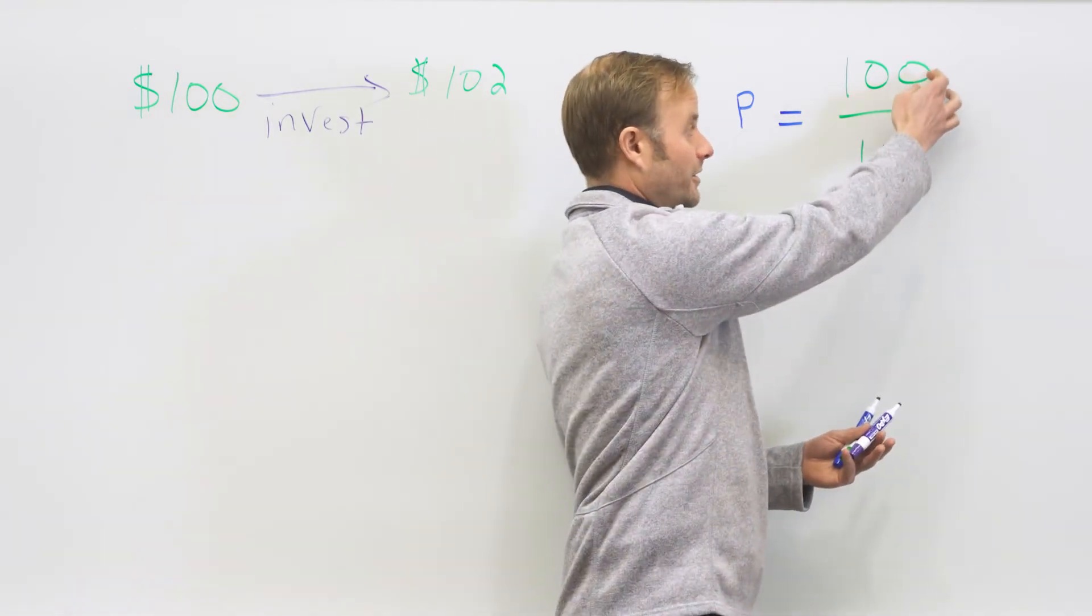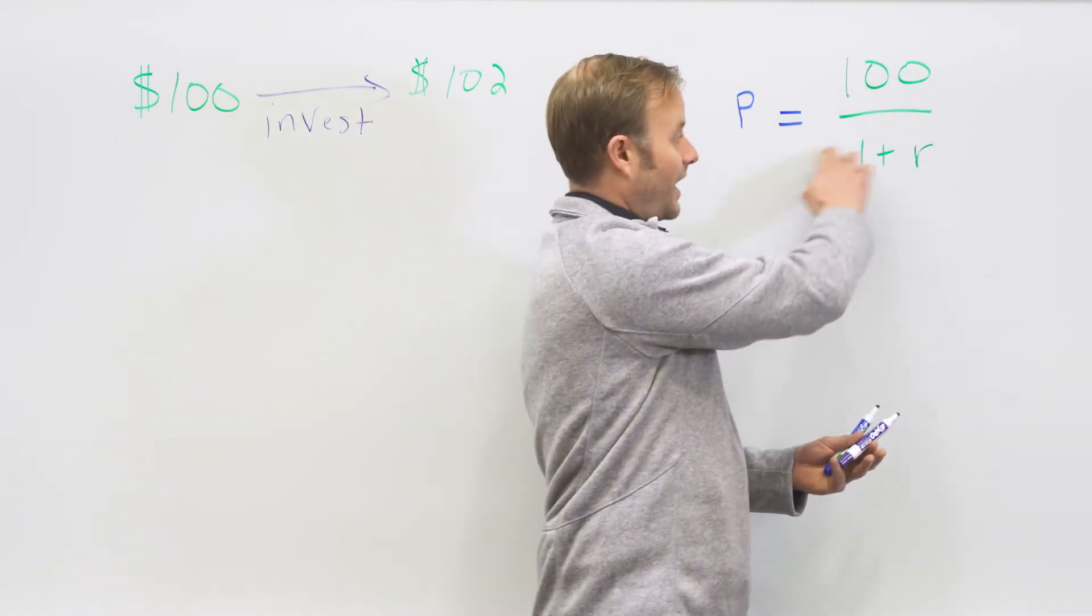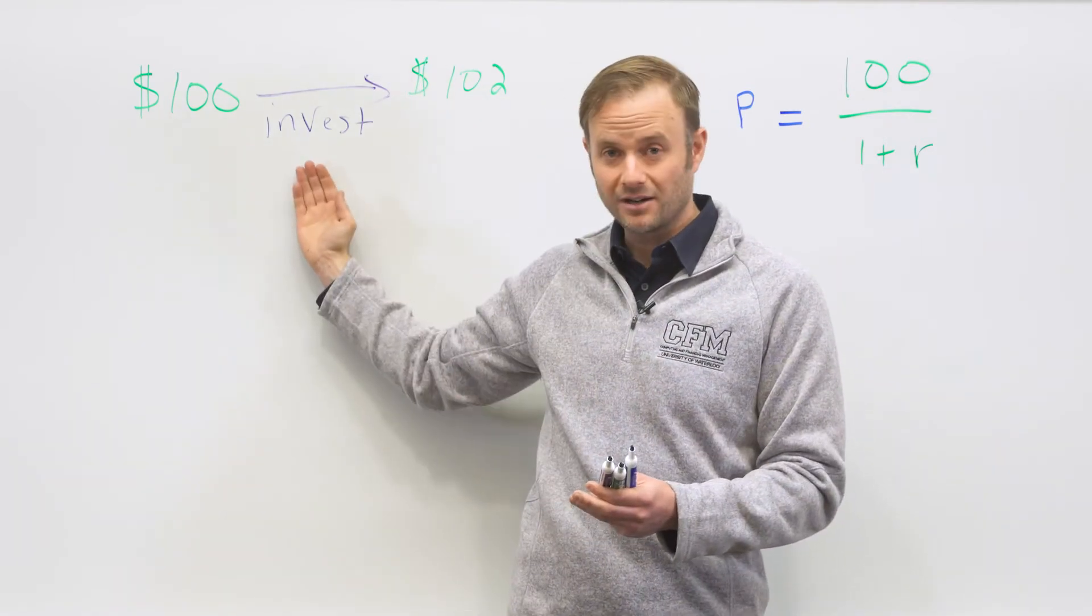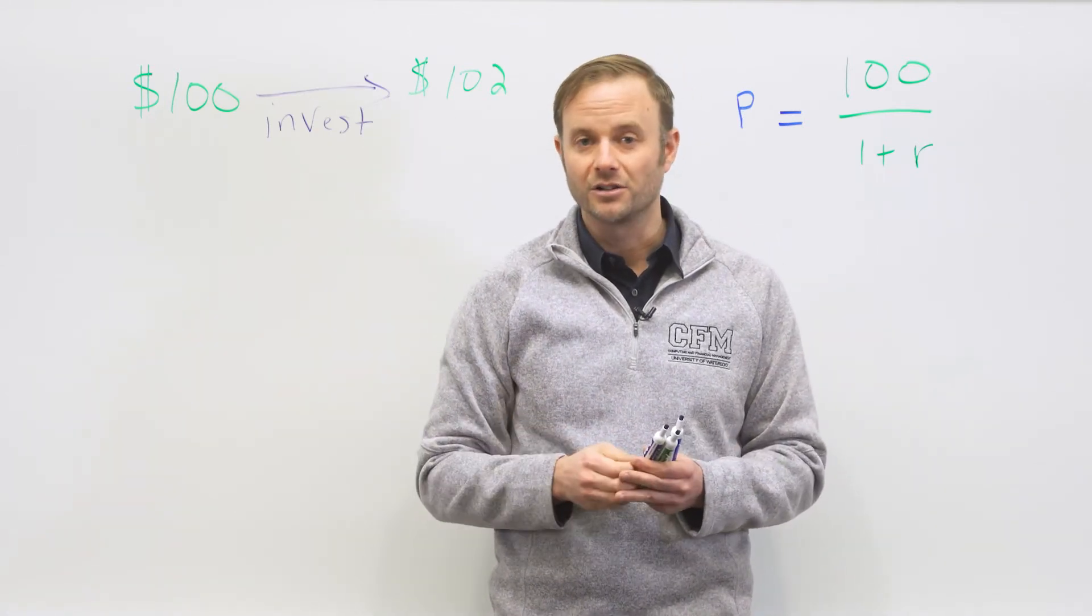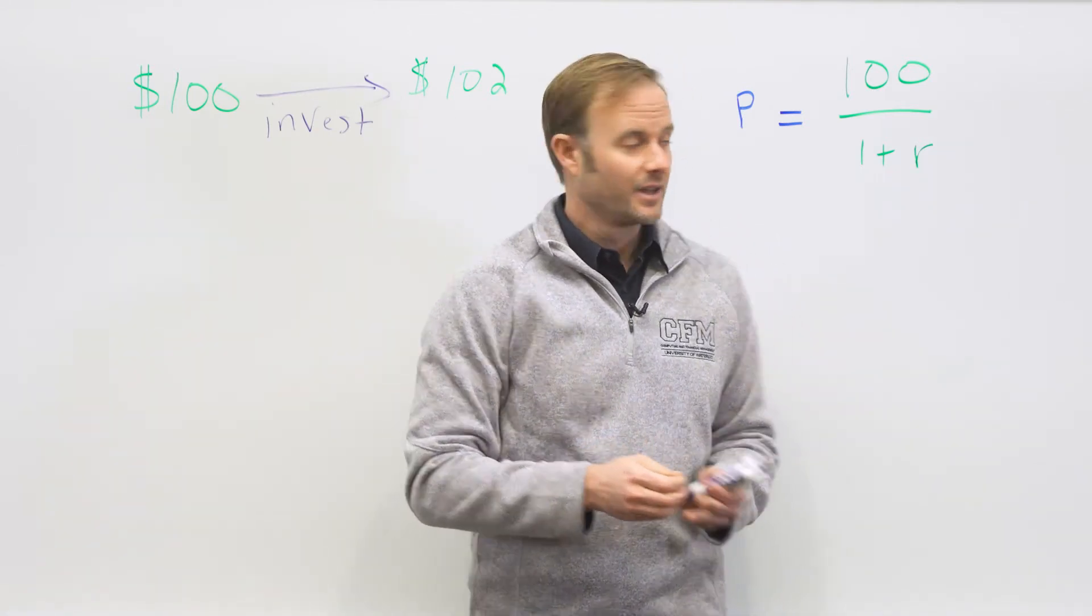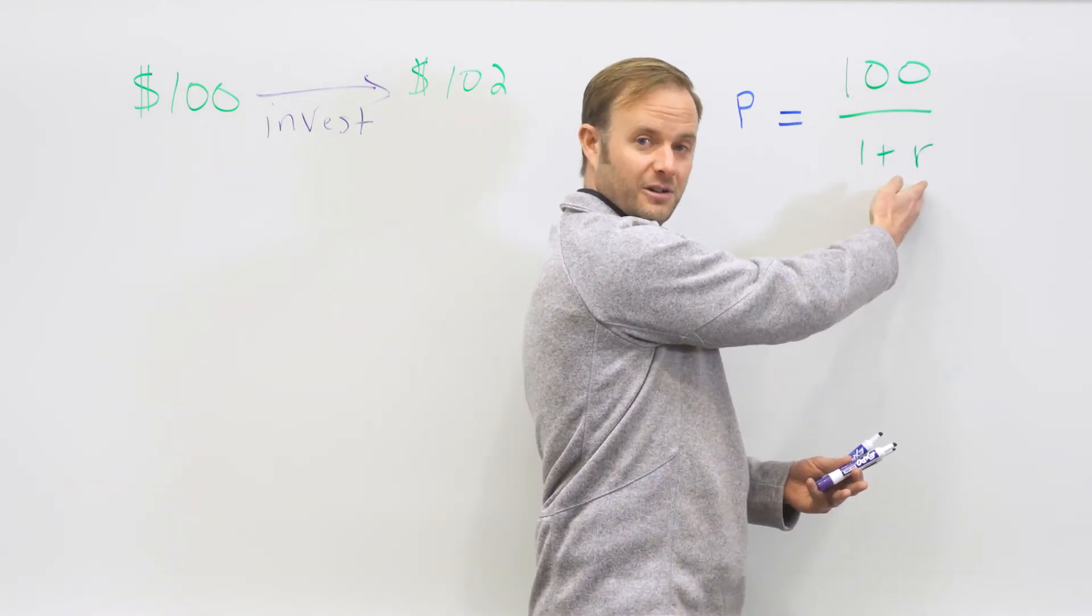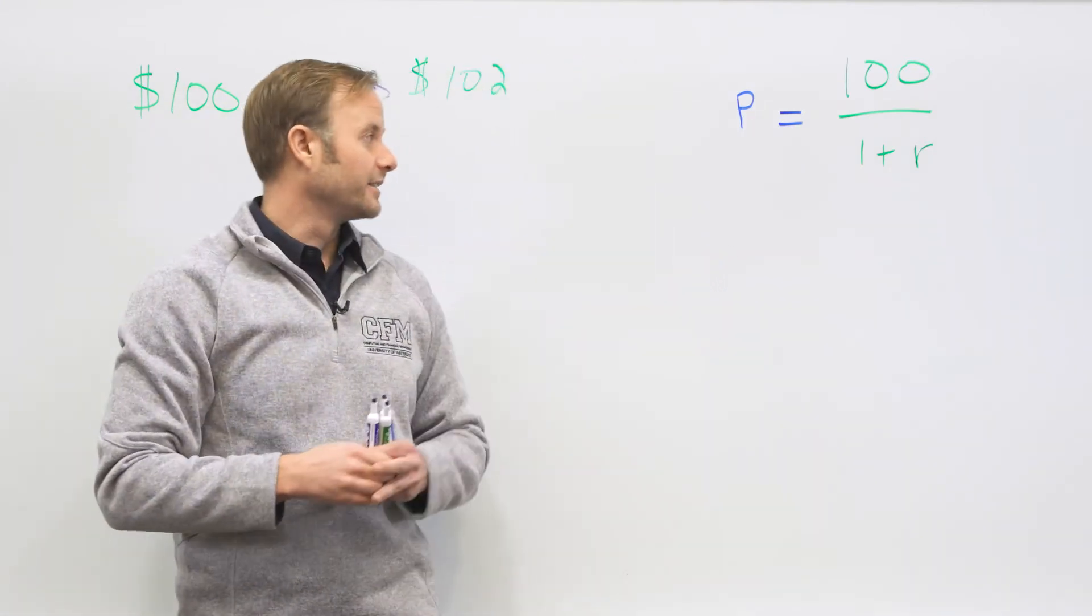If I want to bring $100 back to today, I'm going to divide by 1 plus r. In the case of this example here, r would be 2%. So if I want to know the value of $100 in one year's time, it's 100 divided by 1.02 or approximately $98. That would represent our price.